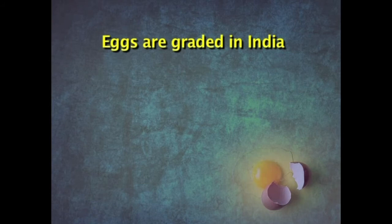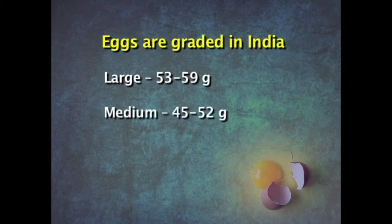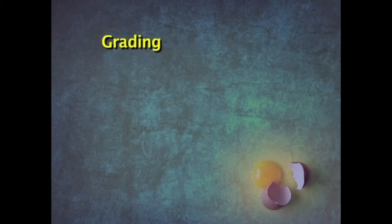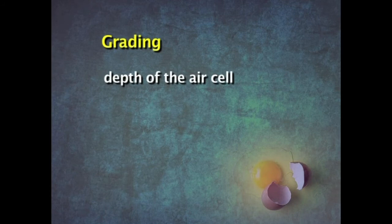Eggs are graded in India as large (53 to 59 grams), medium (45 to 52 grams) and small (38 to 42 grams). The grading is done based on the depth of the air cell, the centering of the yolk, and freedom from defects as A or B grade. If the yolk is in the centre, the egg is free from defects, and the air cell is not very deep, then it is given A grade. As eggs deteriorate, the size of the air cell increases because of loss of moisture.